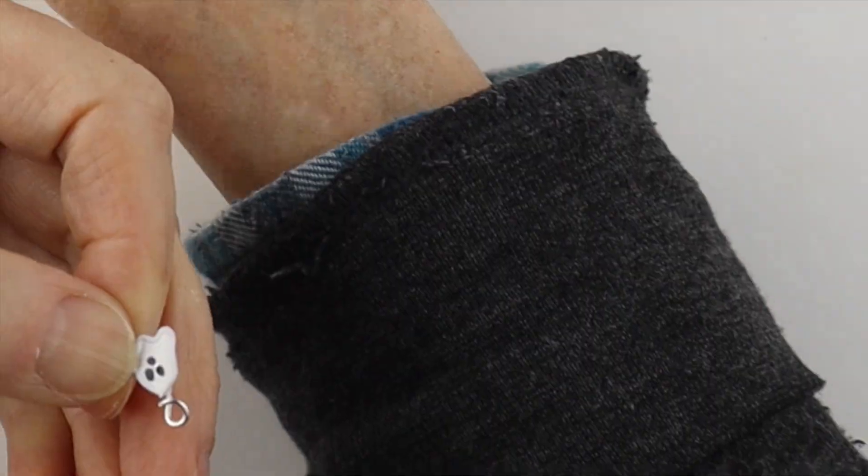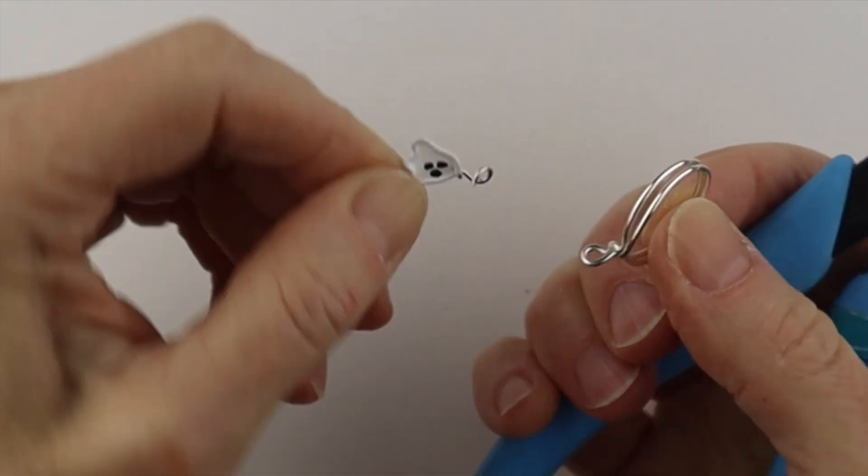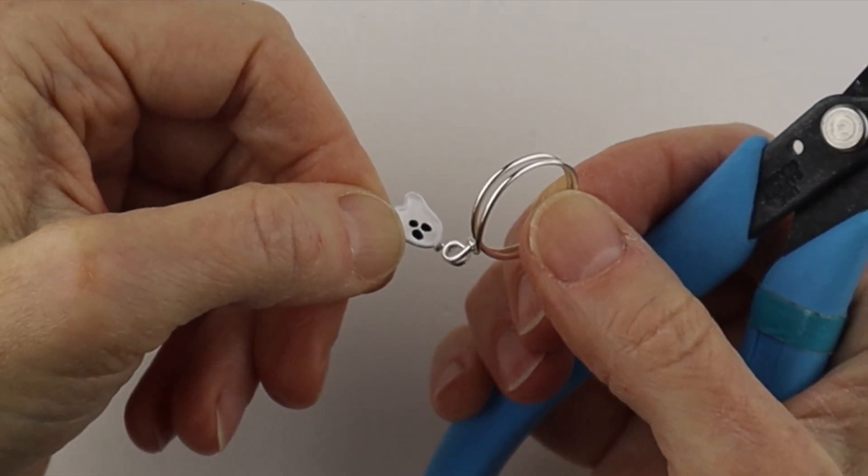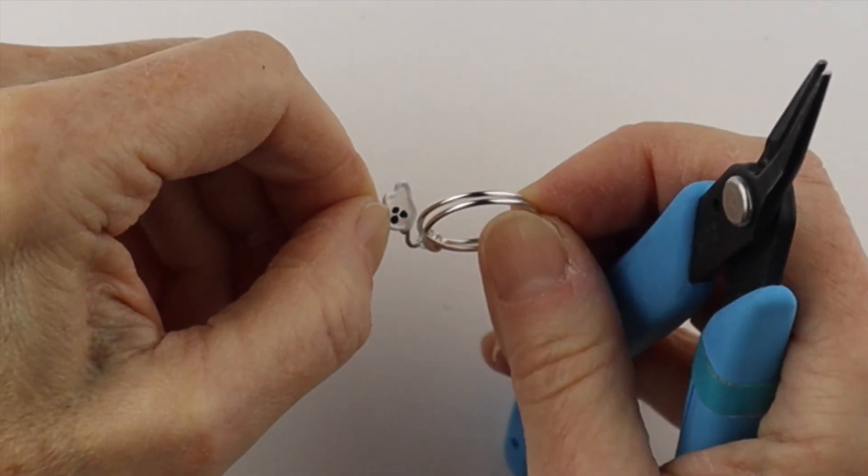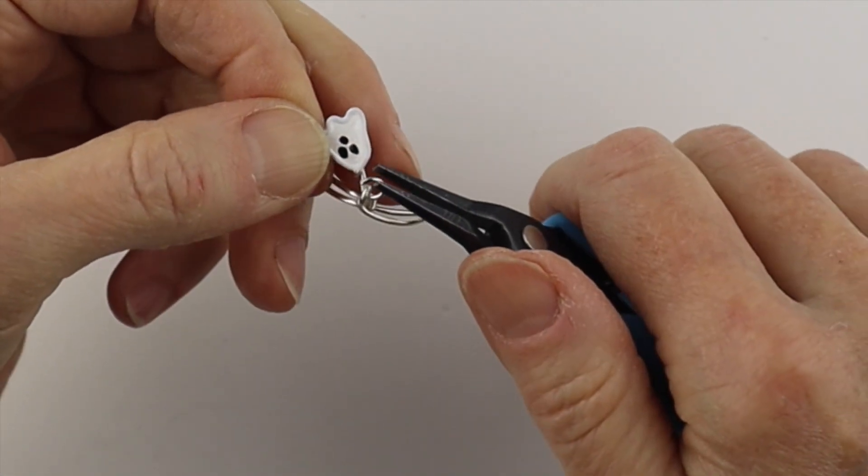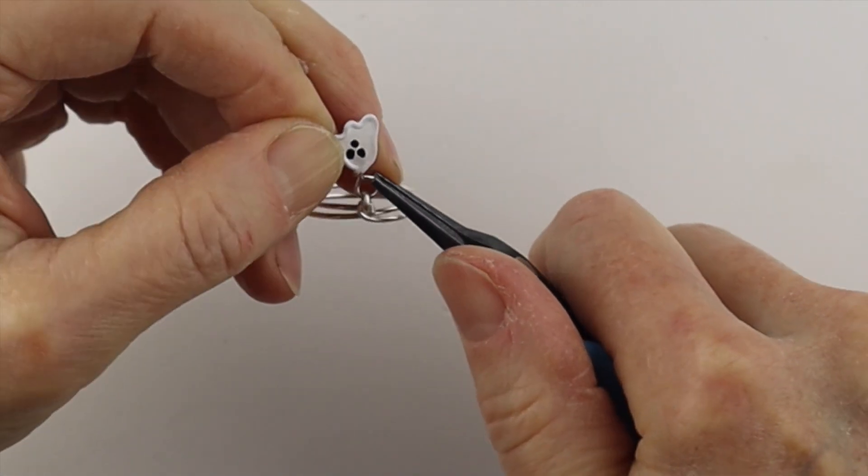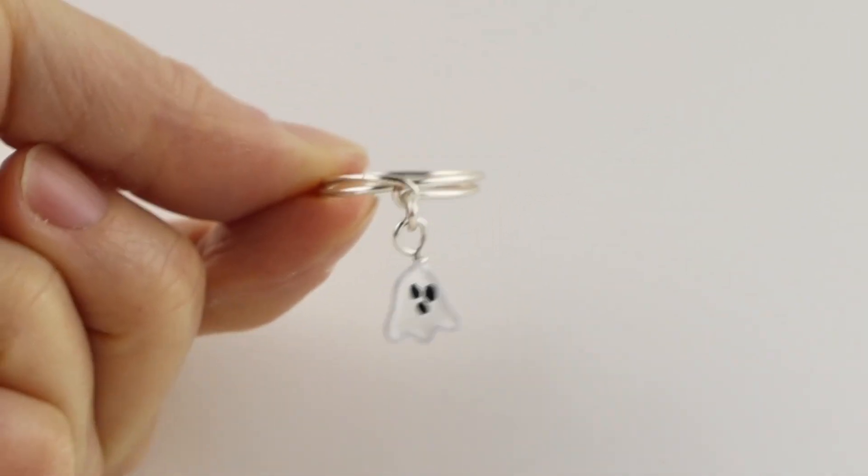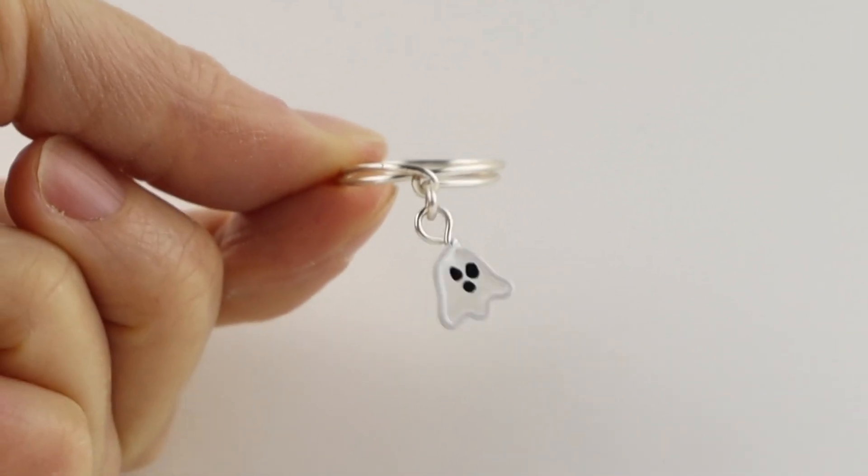Open it up a little more. I painted both sides the second time with a little bit better. So then we're going to slide it on the ring. Close it up. And there we have our cute little dangly ghost ring.